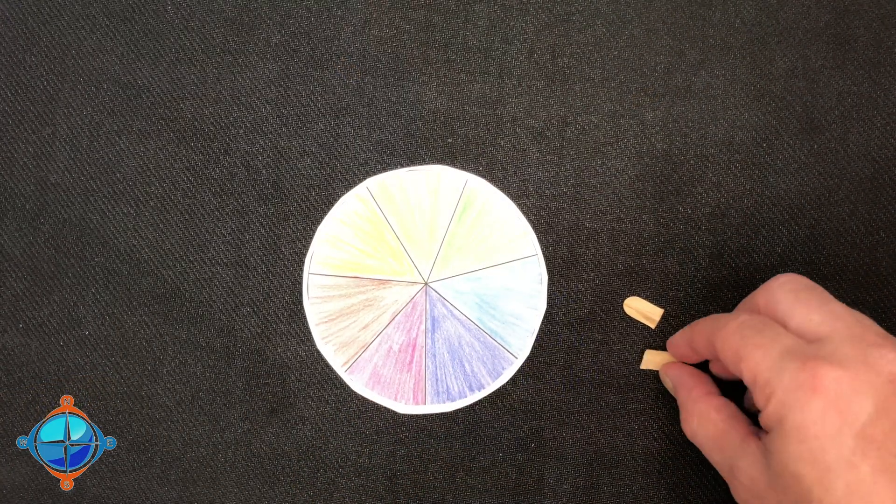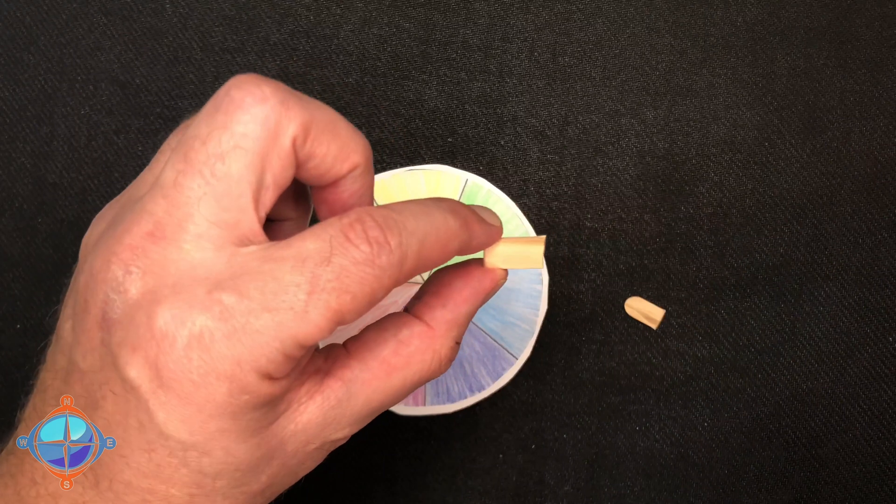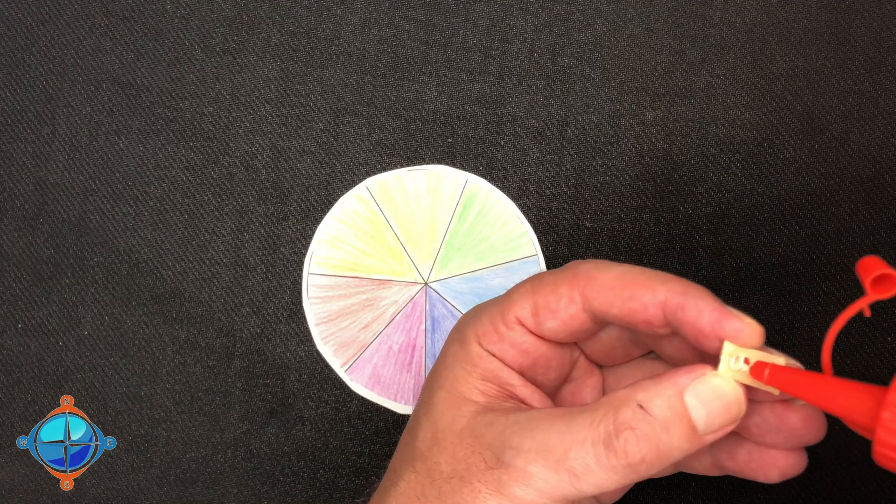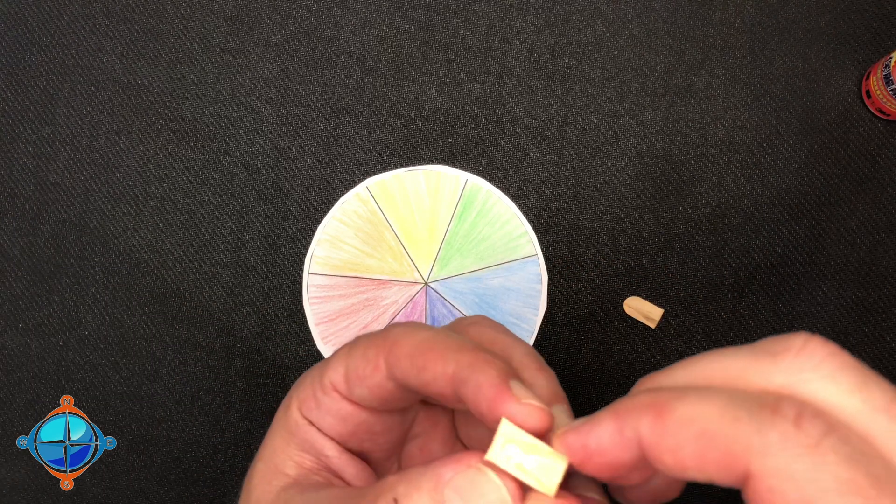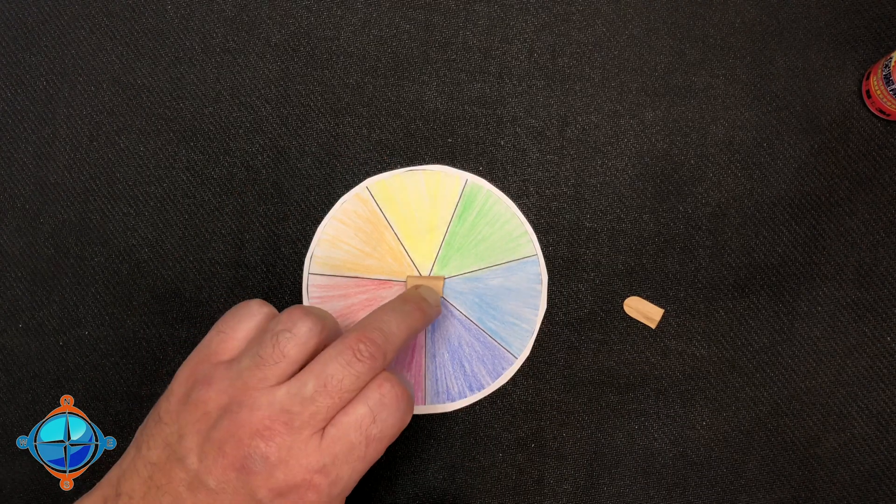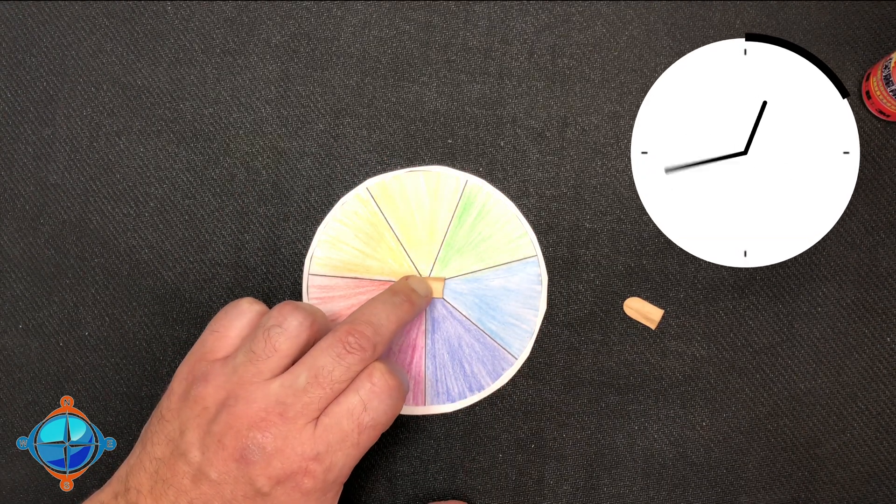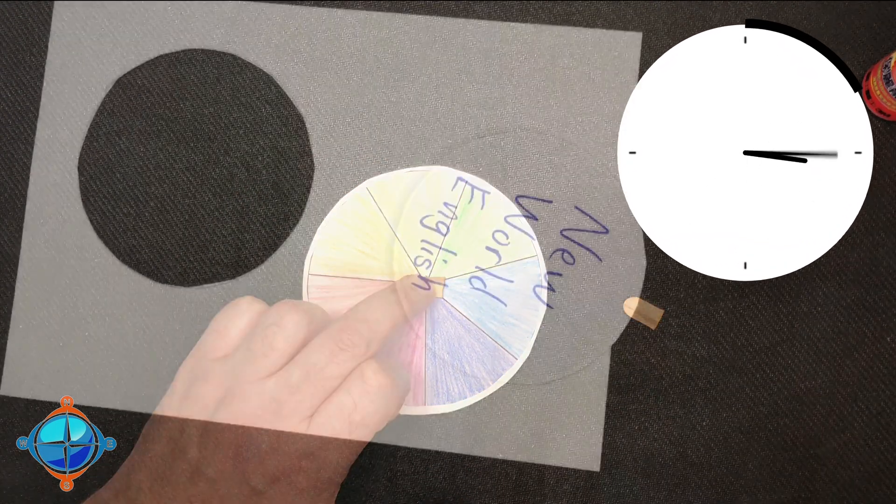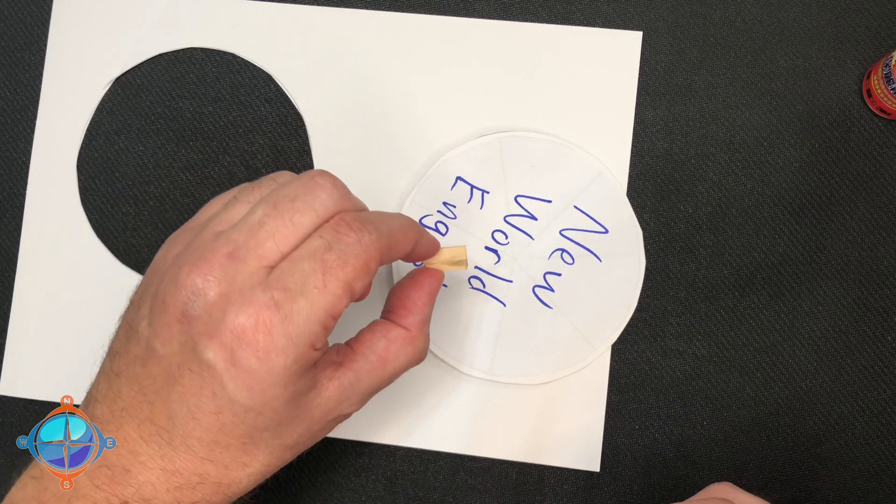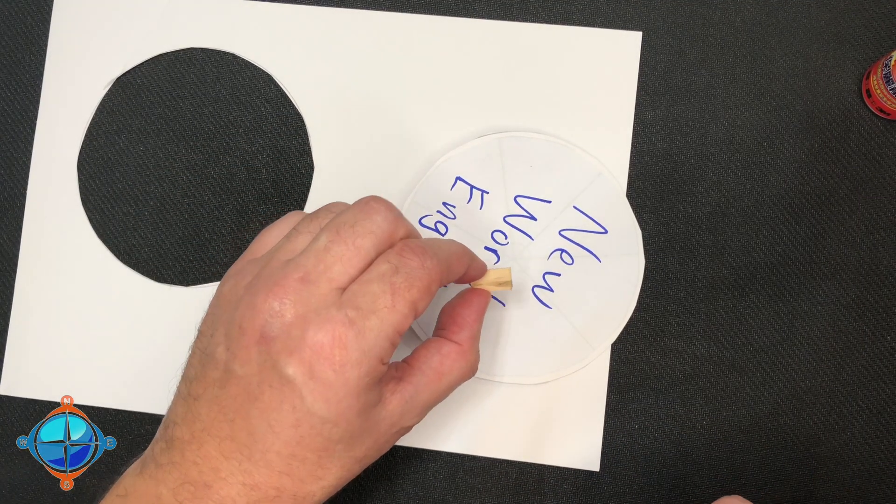Right now we're going to get to this little popsicle stick. Put some glue on your popsicle stick and then very carefully you want to get it right in the middle. You want to push it down, maybe hold it for a few seconds. Now a very important thing to remember: the popsicle sticks, they have to go the same direction.